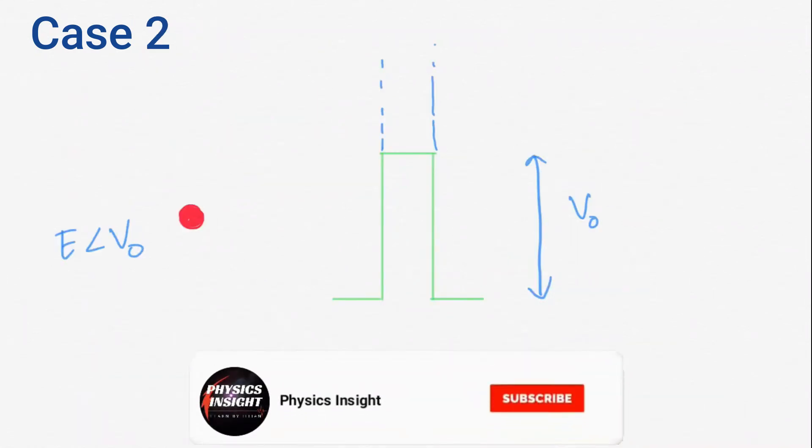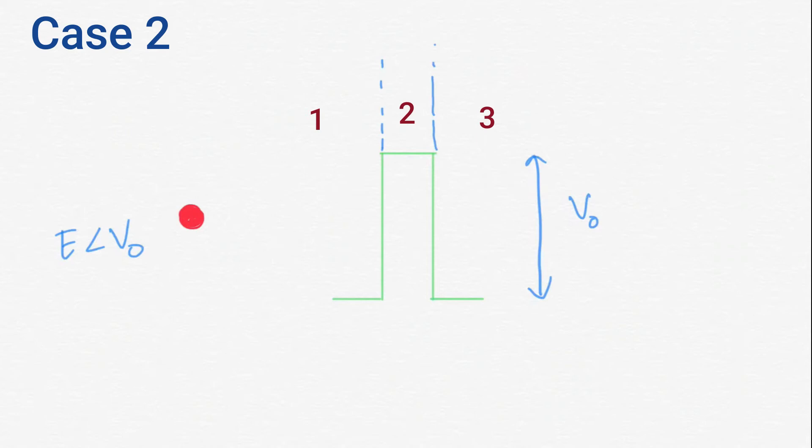Now case 2: energy is less than V0. First divide our problem into three regions and name them as 1, 2, and 3 which have different potential values. Now on doing calculation by using Schrödinger equation we can find the wave function. But let's not go mathematical in this video.